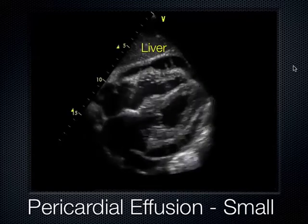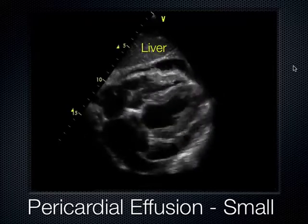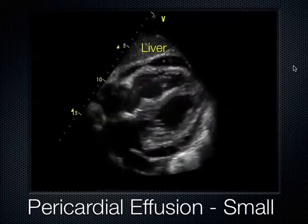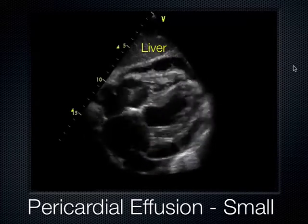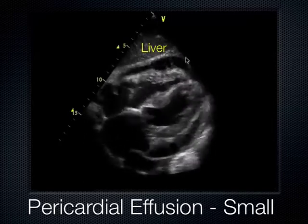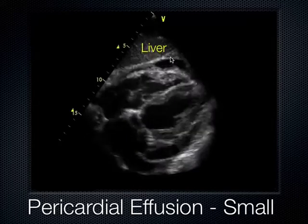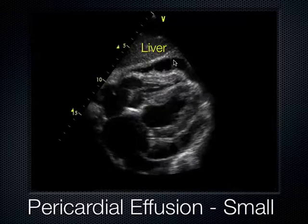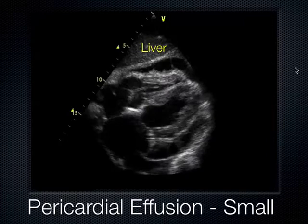People always ask how much fluid is around the heart. To estimate, at end-systole when the ventricle pulls maximally away from the pericardium, drop a caliper and measure. Generally, pericardial effusions of one centimeter or less don't need acute intervention. When reporting, say: 'I see a pericardial effusion between the RV and the anterior pericardium measuring approximately 2 centimeters.' You can use the one-centimeter hash marks along the side of the ultrasound screen to eyeball measurements quickly.